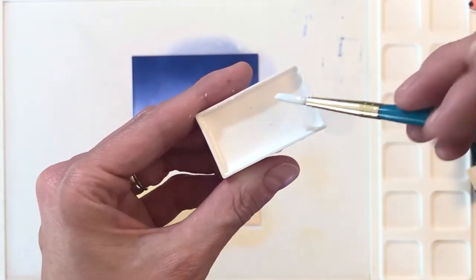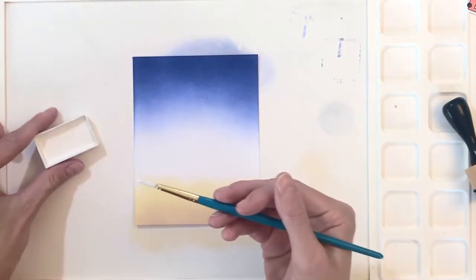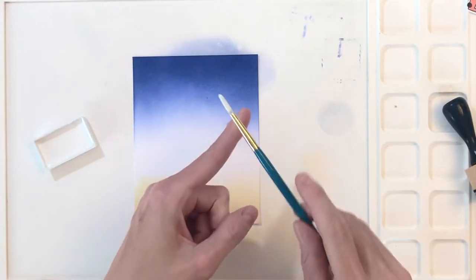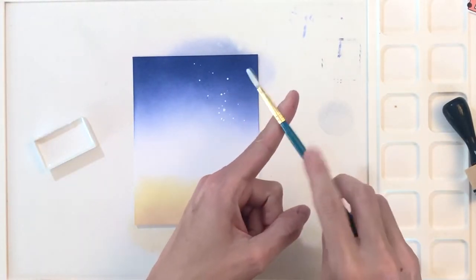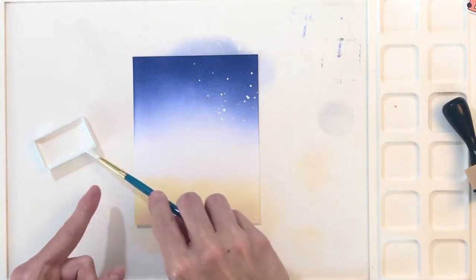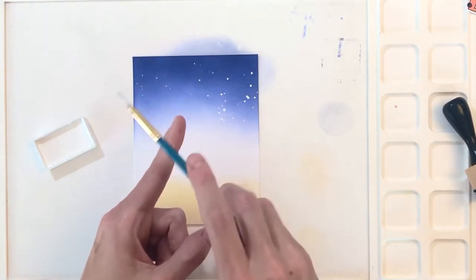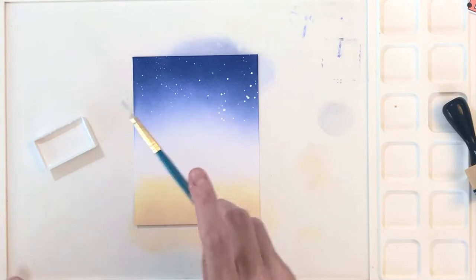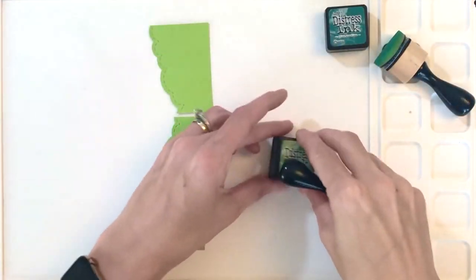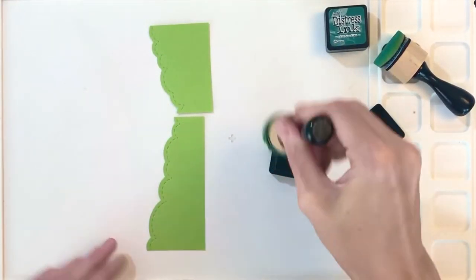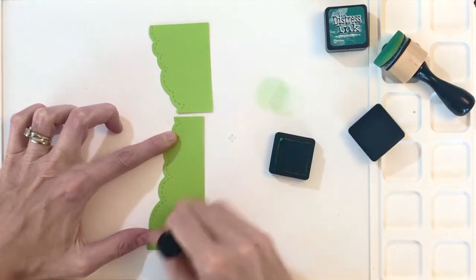Now I'm going to take some Gansai Tambi white paint, mix it with some water, then load the brush up with the paint and then tap the loaded brush on my finger. That creates these little splatters that will resemble stars.